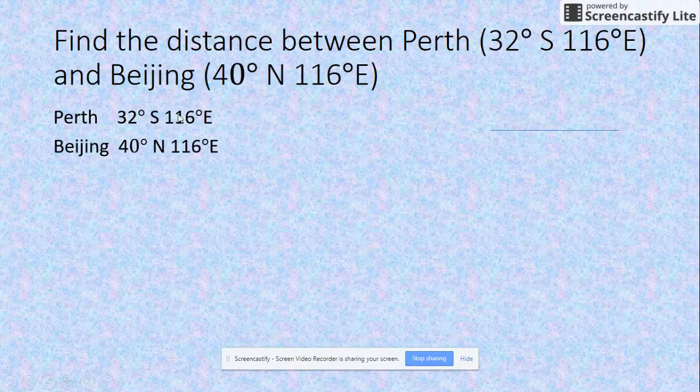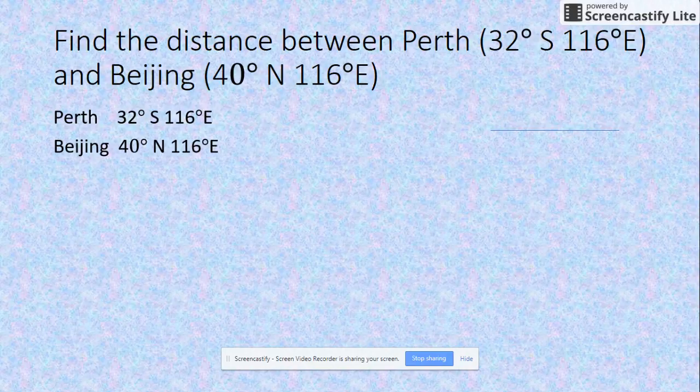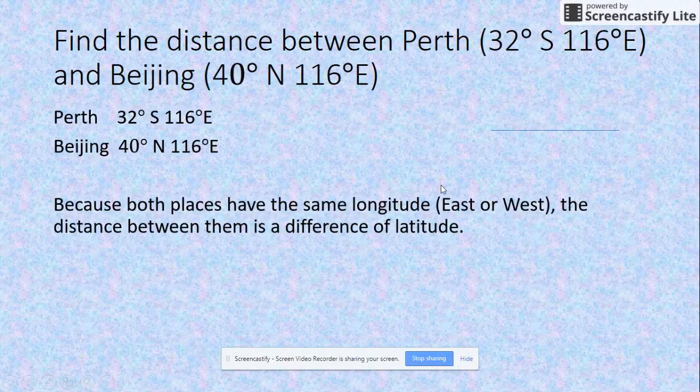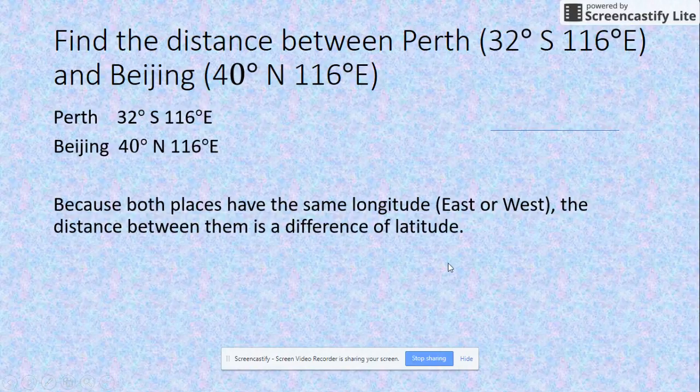The first thing I would do is write them underneath each other, because as you can see, their east coordinates are the same. It's their south and north that are different, so it's your latitude that you're actually going to be looking at here, because that goes across. The distance between them is the latitude, so it's our north and south.